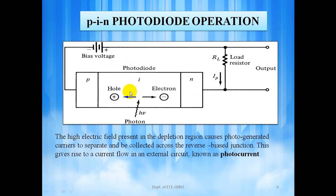As the middle layer is intrinsic in nature, it offers a high resistance and therefore most of the voltage drop appears across it. Thus, a strong electric field exists in the middle I region. Such a configuration results in the drift component dominating the diffusion component and therefore the response time is very good. The high electric field present in the depletion region causes photogenerated carriers to separate and be collected across the reverse bias junction. This gives rise to a current flow in an external circuit known as photocurrent which is indicated by IP in the circuit.